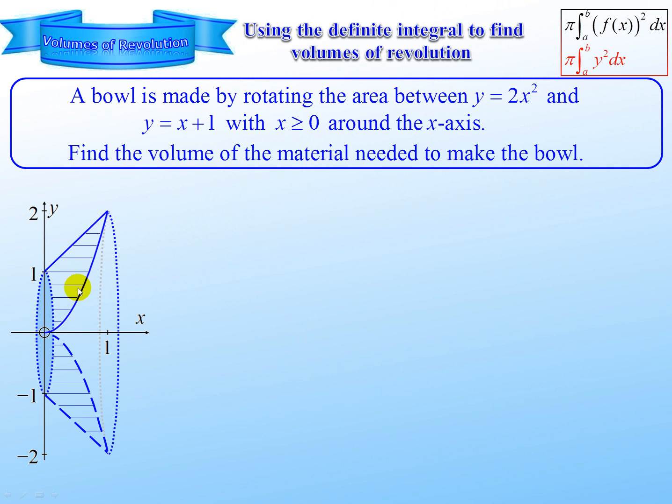So there is y equals 2x squared. And there is y equals x plus 1. Now if we take this shaded section between the two graphs, which is the straight line above and the parabola below, the area between formed by subtracting the parabola integral from the straight line integral, and we are going to rotate it around the x-axis to form a bowl.